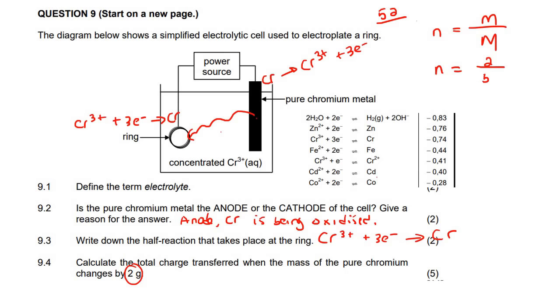and then the molar mass was 52. So if we had to go work this out, I'm not going to round off, so we end up with 1 over 26. So we have the moles of chromium. That is pure chromium.